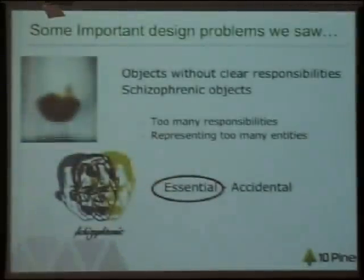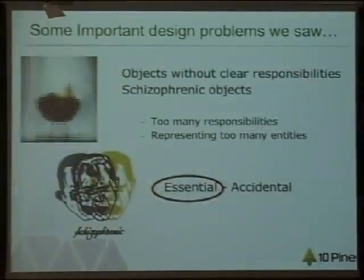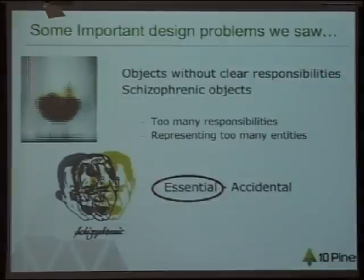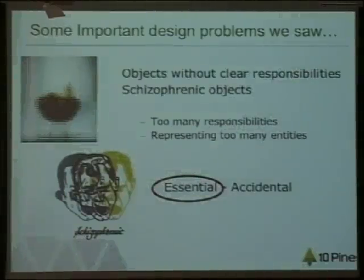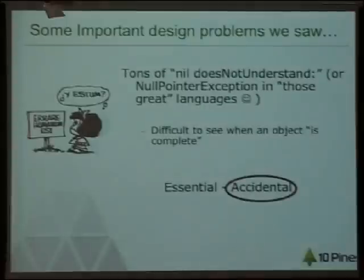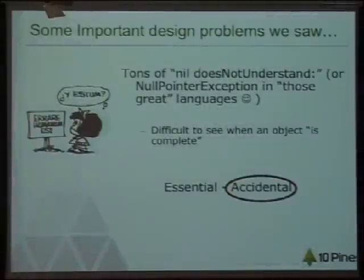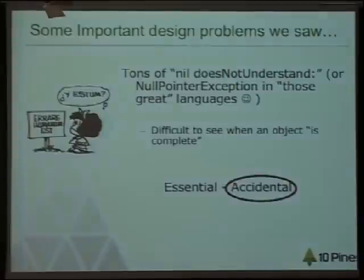Another issue is we're used to having objects that do not have clear responsibility — objects that are schizophrenic, doing 10 things at the same time. You don't know what they do or what they represent. For me, that's a very essential problem. We have others, maybe more accidental, like nil-does-not-understand or null pointer exceptions — very common for junior developers.